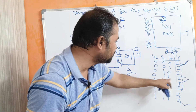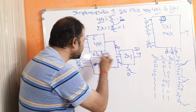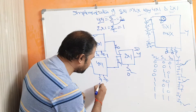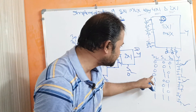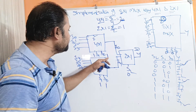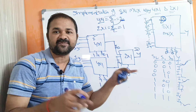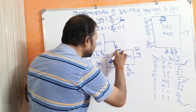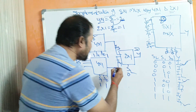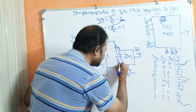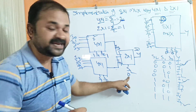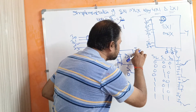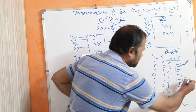Now check for S2=0, S1=1, S0=1 (selecting I3). With S1 and S0 both 1, the last data input of the first 4 by 1 multiplexer is selected, which is I3. The second multiplexer similarly selects I7. Since S2=0, the 2 by 1 multiplexer selects the first input, which is I3. This is also correct.